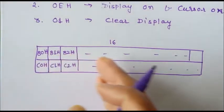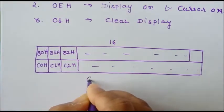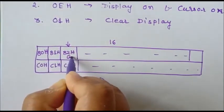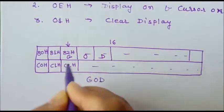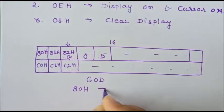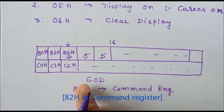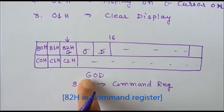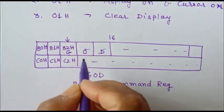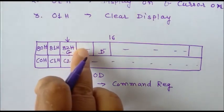To display a character at a particular position, we first write the address of that position into the command register. For example, to display 'G', 'O', 'D' starting at address 82h, we first write 82h into the command register, then write the ASCII value of 'G' into the data register. After displaying the first character at 82h, the cursor position automatically increments by 1, so next time we do not need to write the next address into the command register.